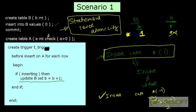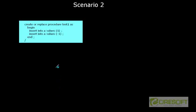Now I'm going to do something a bit more interesting. In scenario two, I'm going to create a procedure. The procedure name is test_one, and inside that procedure I'm going to do insert into A with value one, and insert into A with value minus one. Then I'm going to execute that procedure by calling test_one.